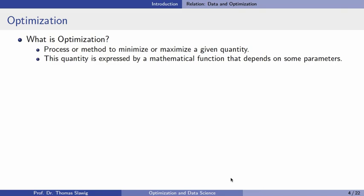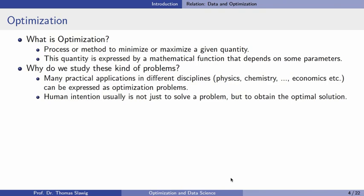Optimization in the mathematical sense means there is a quantity which can be computed and we want to minimize or maximize it. This quantity can be expressed as a mathematical function, and we have some parameters or variables that we can tune — otherwise we cannot optimize. We have a system, a mathematical description of it, a function that gives a quantity as output, with parameters as input. We want to tune these parameters such that the output is minimized or maximized.